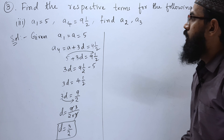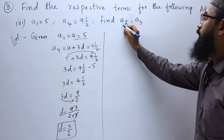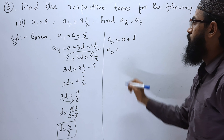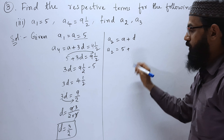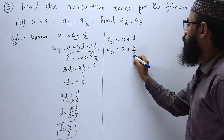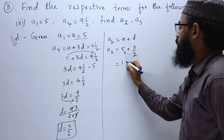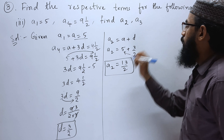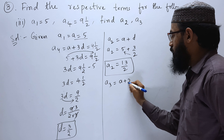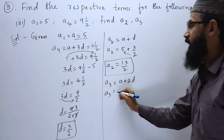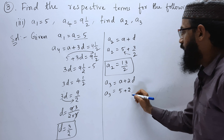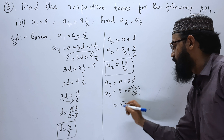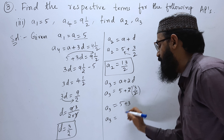Now we have A and D. Finding the second term: A2 equals A plus D equals 5 plus 3/2. Multiplying: 2 times 5 is 10, plus 3 is 13, so A2 equals 13/2. For the third term: A3 equals A plus 2D equals 5 plus 2 times 3/2. The 2 cancels, giving 5 plus 3, so A3 equals 8.